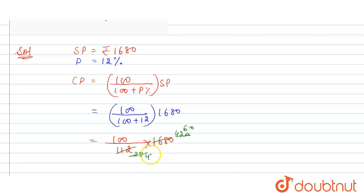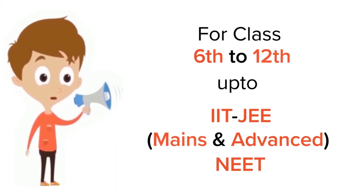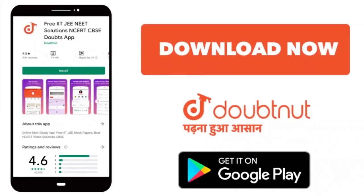Now 100 divided by 4 is 25, so 25 into 60 equals 1500. So our CP is 1500 rupees and this is our required answer. Thank you. For class 6 to 12, IIT-JEE and NEET level, trusted by more than 5 crore students. Download Doubtnut app today.